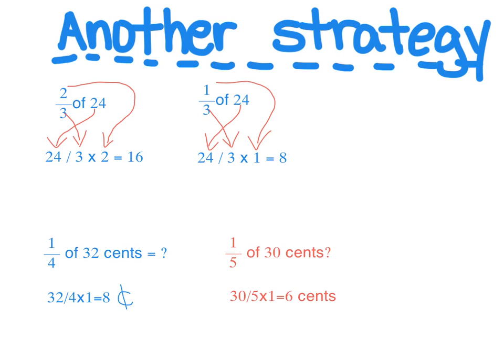Next problem, we have one-fourth of 32 cents. And same process, I'm going to do 32 divided by four times one is going to give me eight cents.